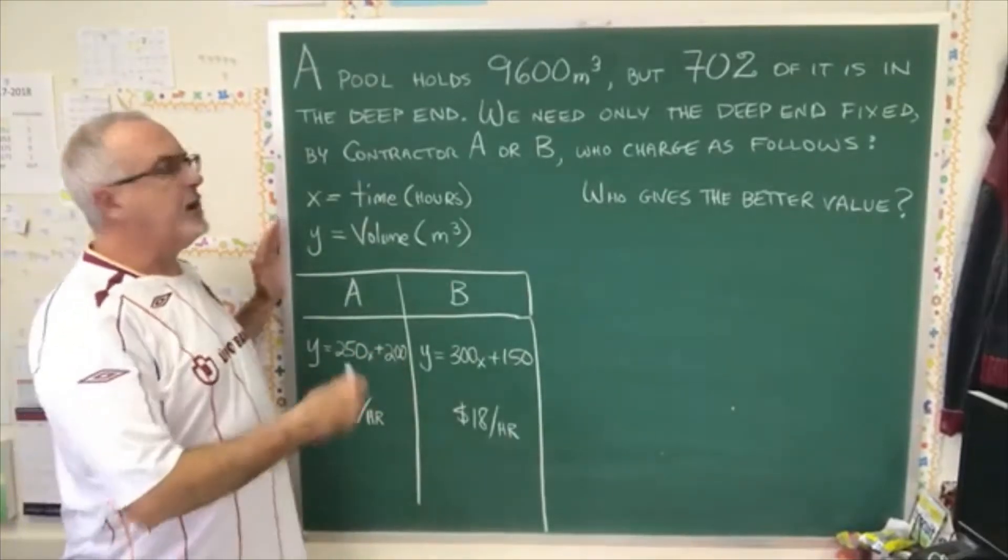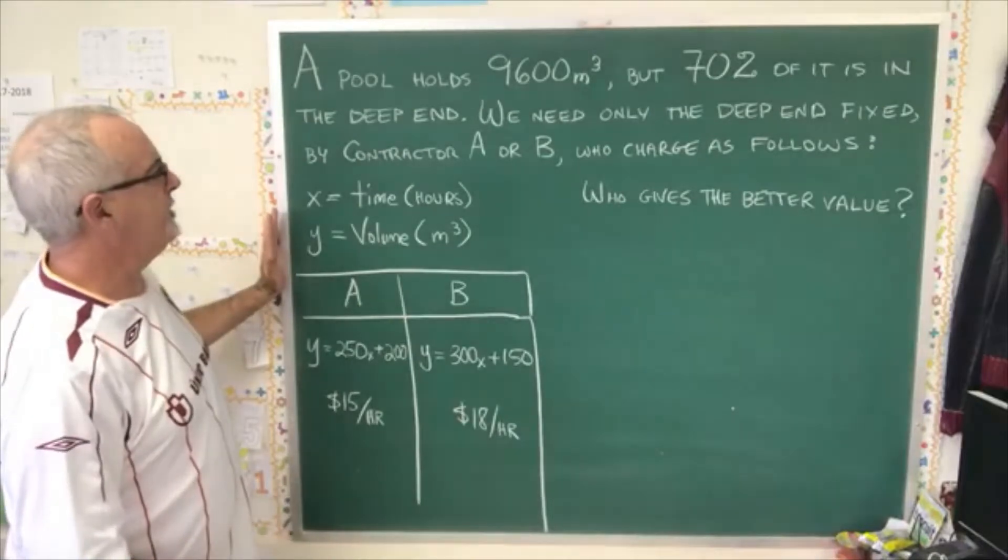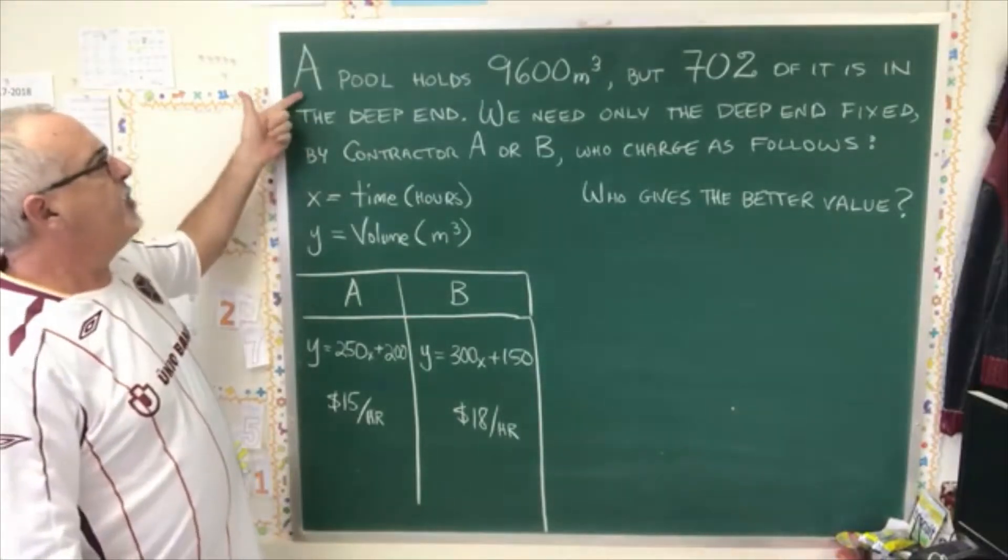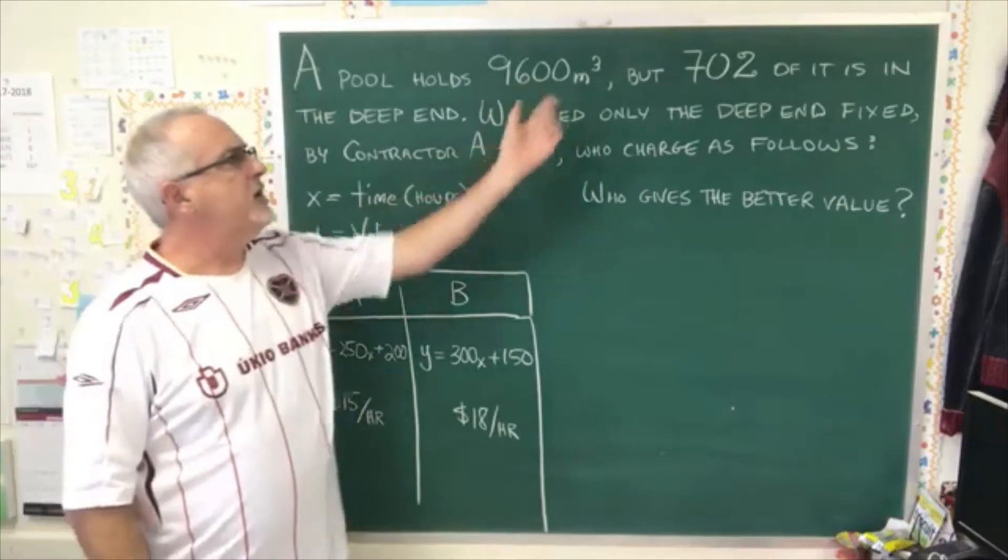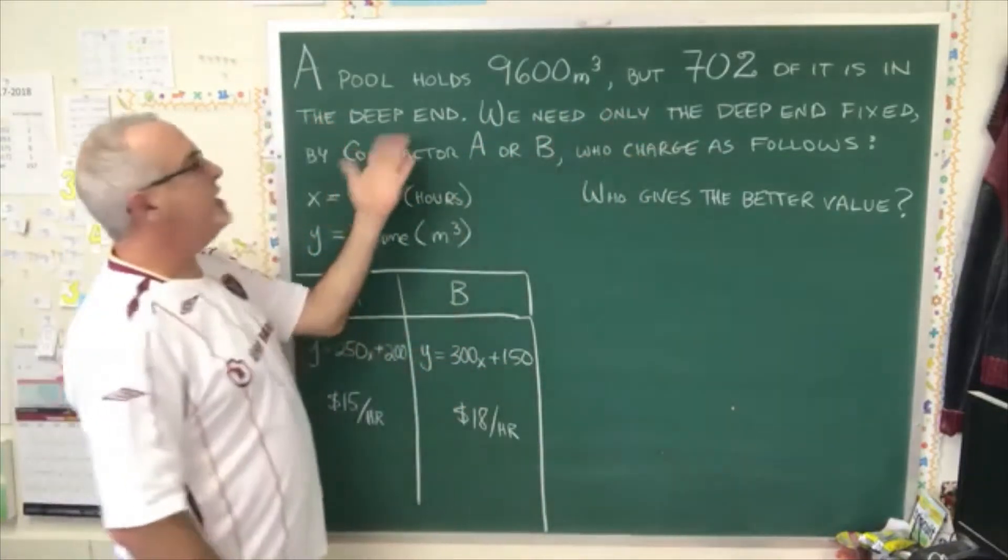Today's Daily Dose of Math is about an algebraic model from the Math 2101 course. A pool holds 9600 meters cubed of water, but 70% of it is in the deep end.